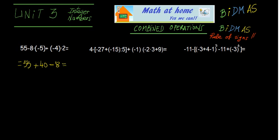Here we have positive, negative, negative, and positive to multiply. When we multiply all of these we get negative 8. Now, as always, we add together the positive and negative numbers: 55 plus 40 minus 8, and the solution is positive 87. Check it with your solution.